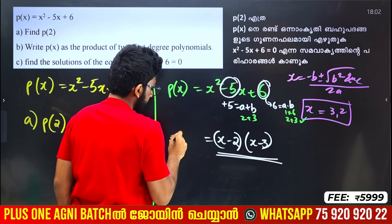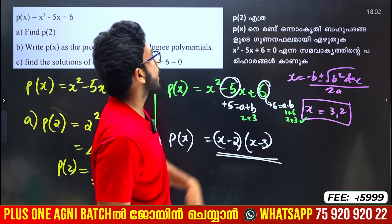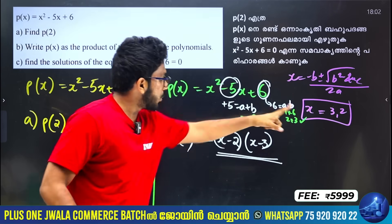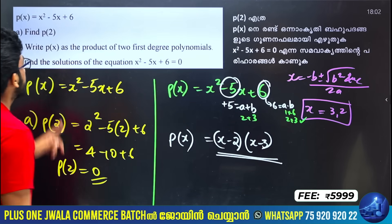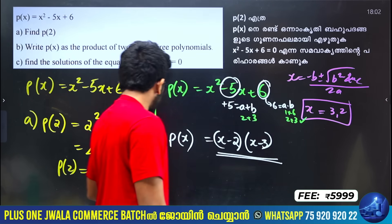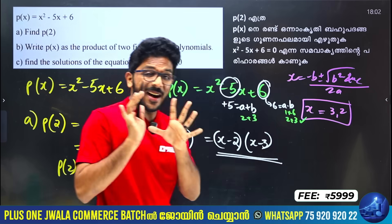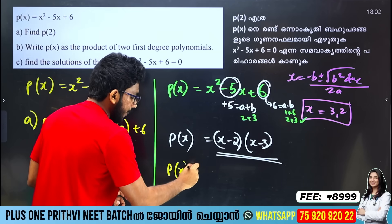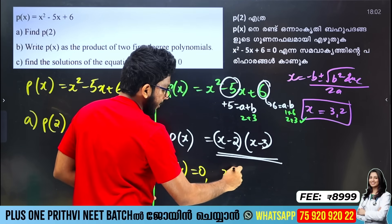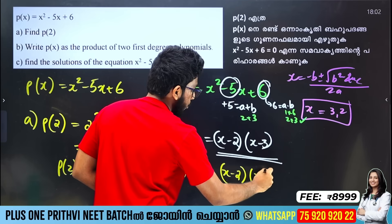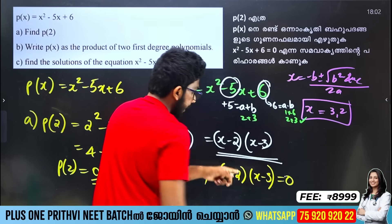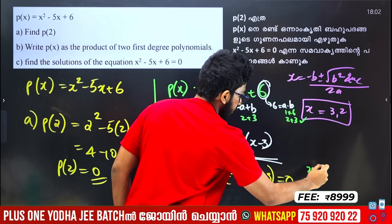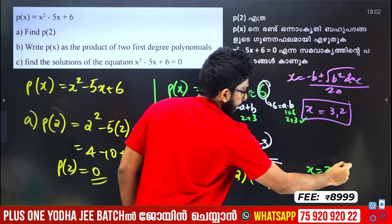If you put that on paper, the correct factorization is x minus 2 into x minus 3. Setting each factor equal to zero: x minus 3 equals 0 gives x equals 3, and x minus 2 equals 0 gives x equals 2. That is the answer.